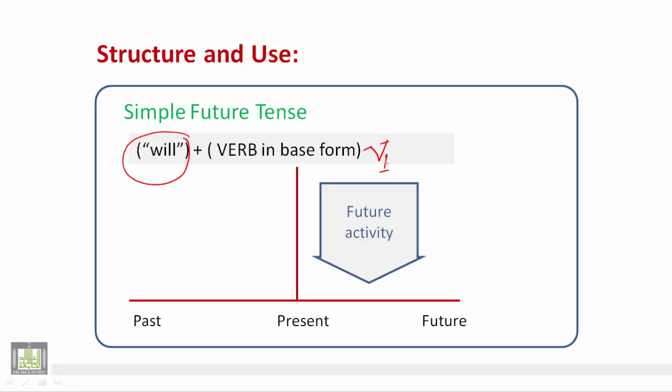With all pronouns, we use the same auxiliary verb which is will plus verb one. So it doesn't matter if you are talking about they, we, you, he, she, it, or I. We use the same auxiliary verb which is will.